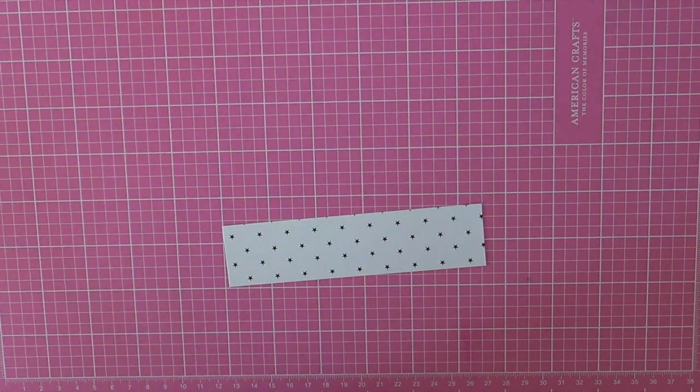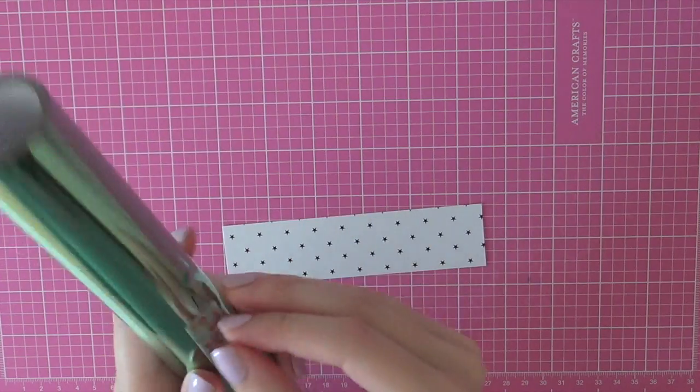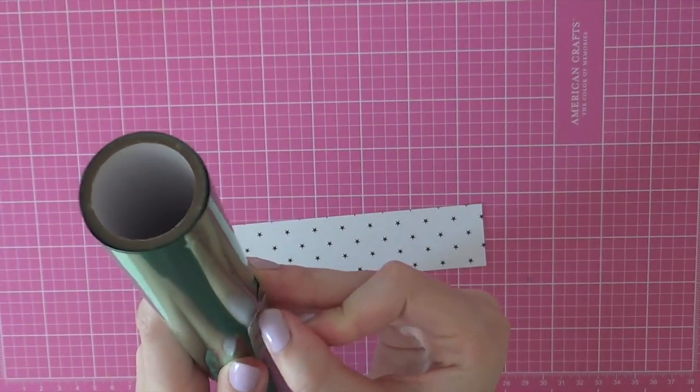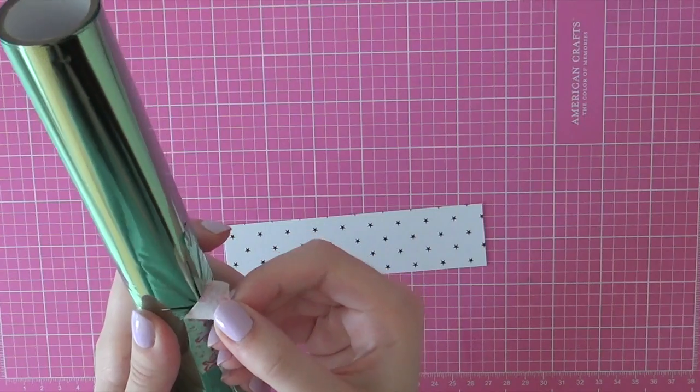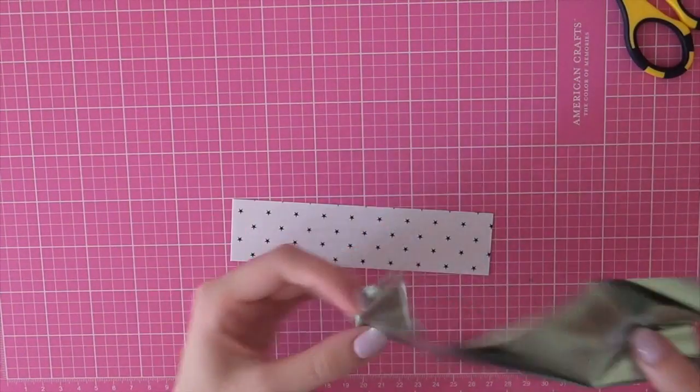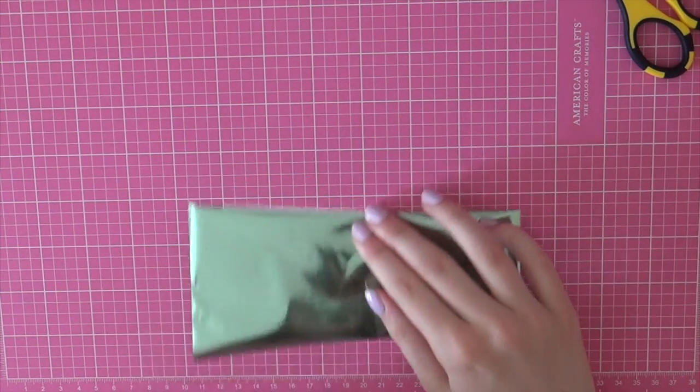I'm going to start out today with a piece of Heidi Swapp pattern paper from the Mink collection. This is some pattern paper and those black areas are all in toner, so toner reacts to foil, so I'm going to be doing some foiling.